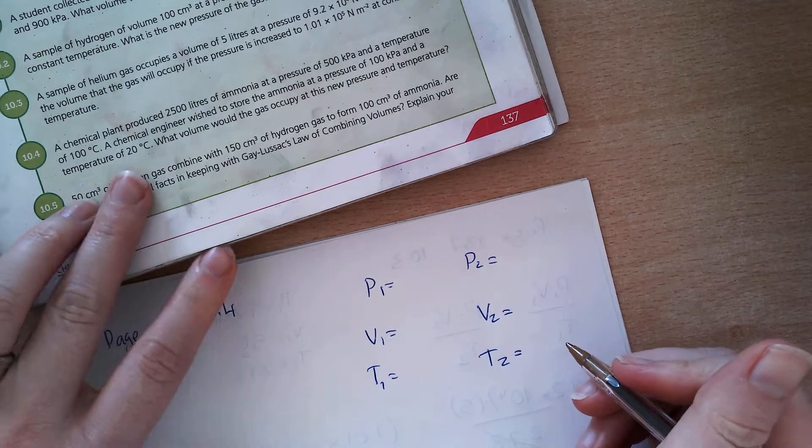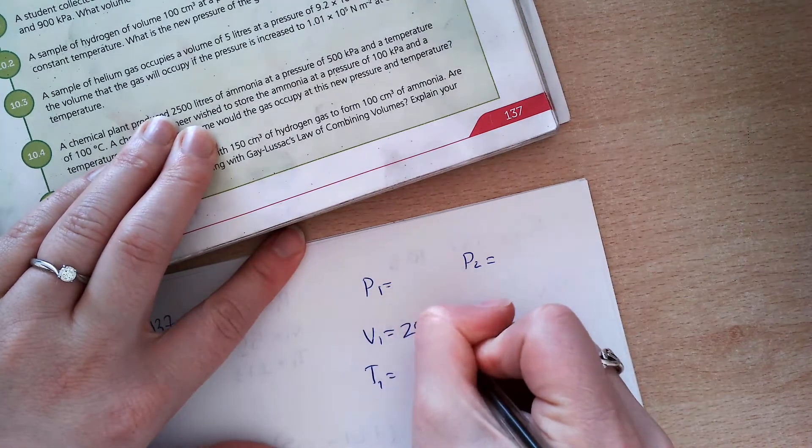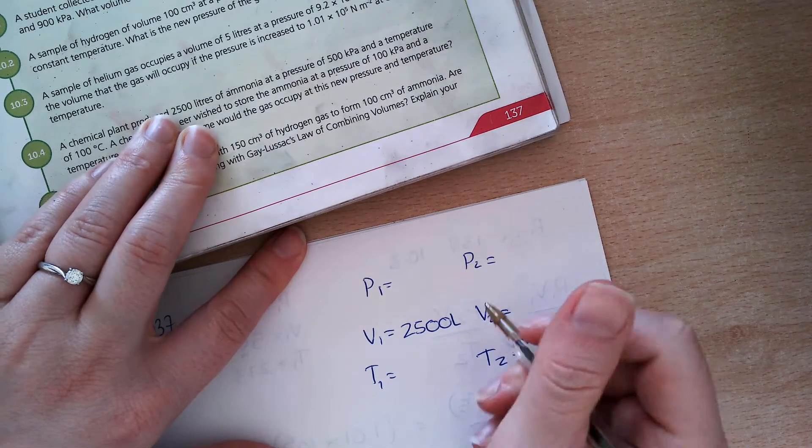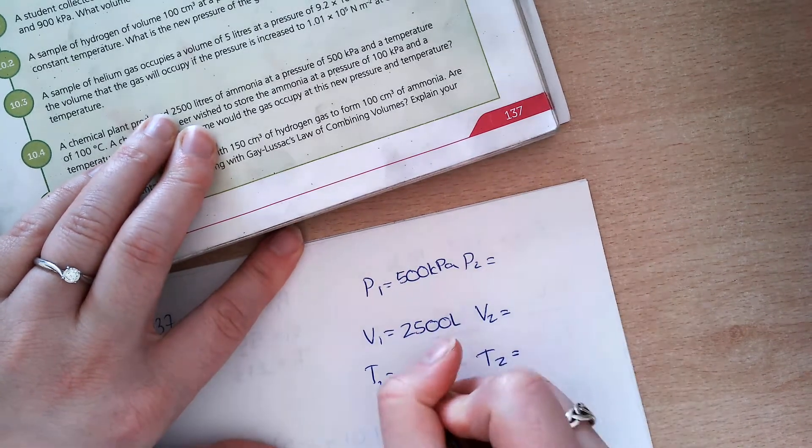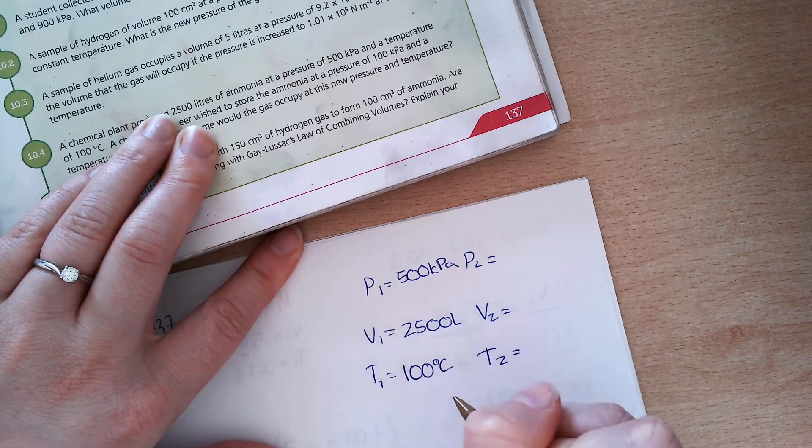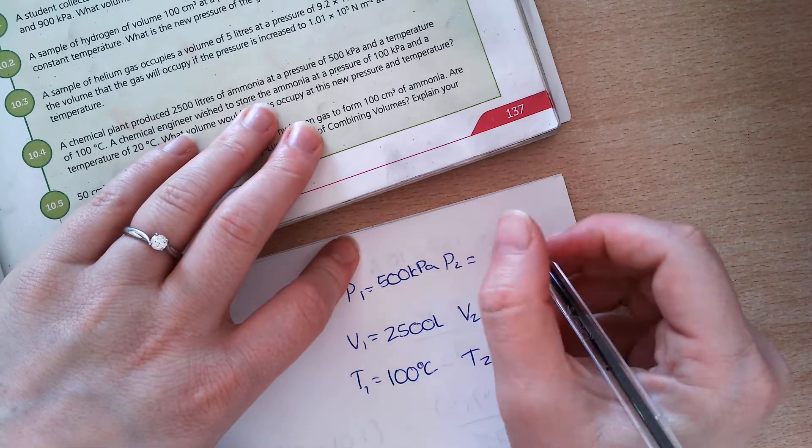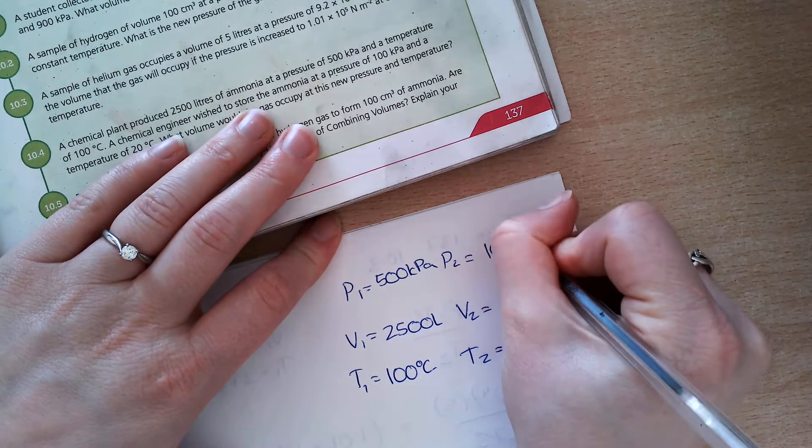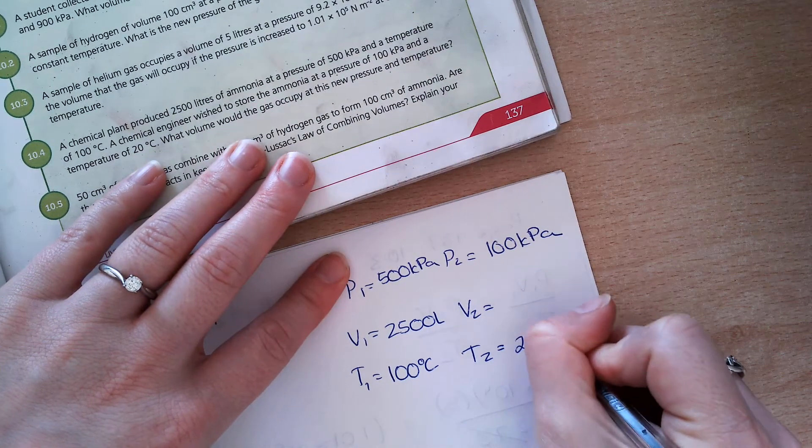So, a chemical plant produces 2,500 litres of ammonia at a pressure of 500 kilo pascals and a temperature of 100 degrees Celsius. A chemical engineer wished to store the ammonia at a pressure of 100 kilo pascals and a temperature of 20 degrees Celsius.